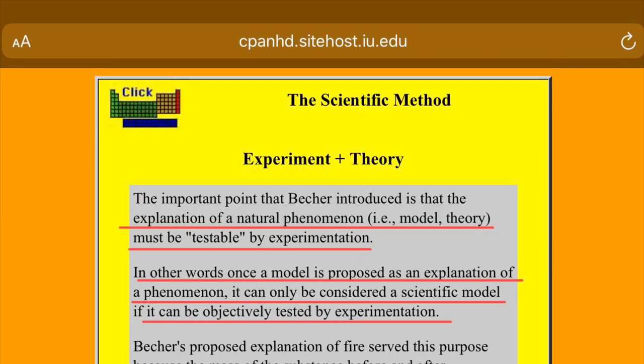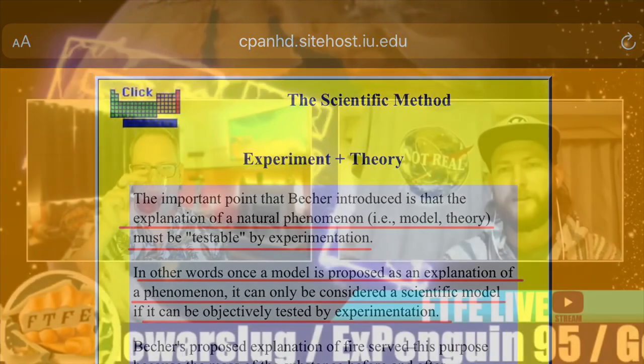The model comes after you've got lots of different data that you can put together. A scientific model is the result of experimentation and has been validated by experiment. It's not a physical thing — it's a collection of experiments and explanations. The explanation of a natural phenomenon, i.e., a model or theory, must be testable by experimentation. So what natural phenomena led you to this globe model?